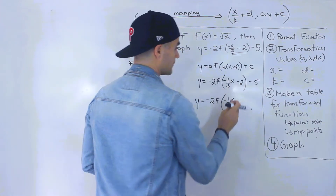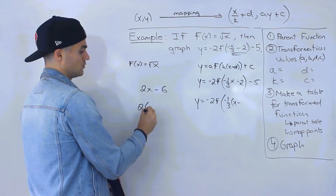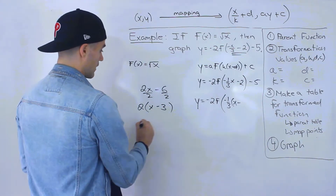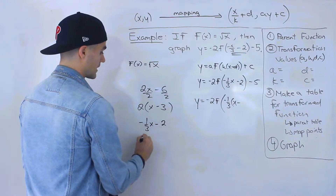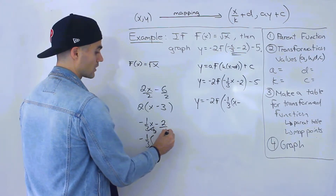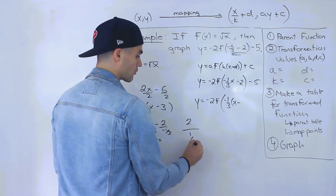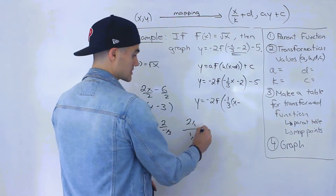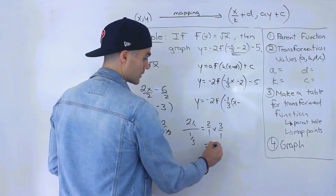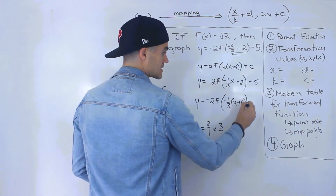To see what's left after factoring, let's take a simpler example: 2x minus 6. If we factor out 2, we divide everything by 2 and get x minus 3. Similarly, if we have negative 1 over 3·x minus 2 and factor out negative 1 over 3, we divide each term by negative 1 over 3. The negatives become positive, and 2 divided by 1 over 3 is 2 times 3, which equals 6. So we're left with x plus 6 in the bracket.